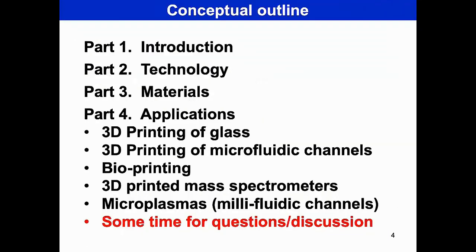Here is the outline of the tutorial. Part 1 is the introduction. Part 2 focuses on technology - specifically the various ways in which 3D printing structures or objects can be obtained. Today we also talk about Internet of Things and one related area is instrumented objects: can you integrate sensors, electronics, everything inside 3D printed structures?